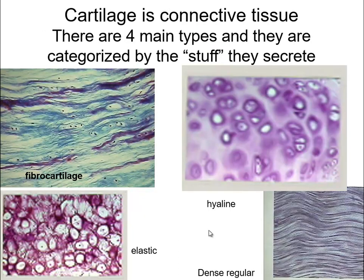Some other tissue you'll be responsible for in lab is dense, regular connective tissue. The bottom right shows dense, regular — it won't be red like smooth muscle would be. To me it looks like strapping tape: if you've seen scotch tape with strings in it, that's what this tissue looks like. They call it dense, regular, and this is where you really need strength — so your tendons, your ligaments, anywhere you need really strong connective tissue, you can lay down dense, regular tissue.